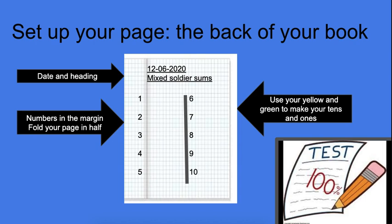Now remember to leave enough spaces between your numbers because soldier sums take up one, two, three lines. So there needs to be at least three spaces between each number so that you don't squash it all in.